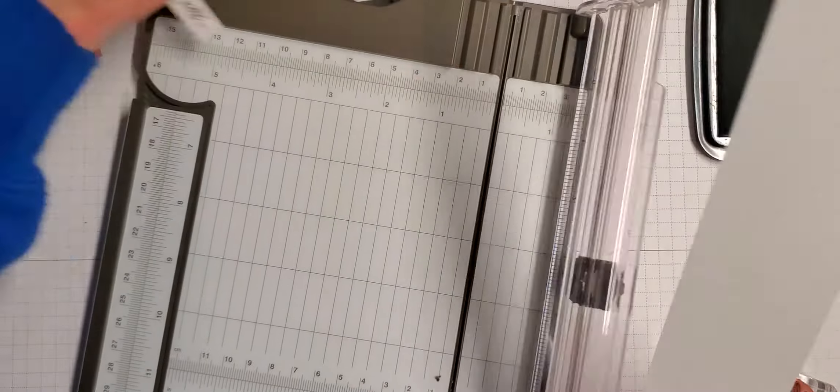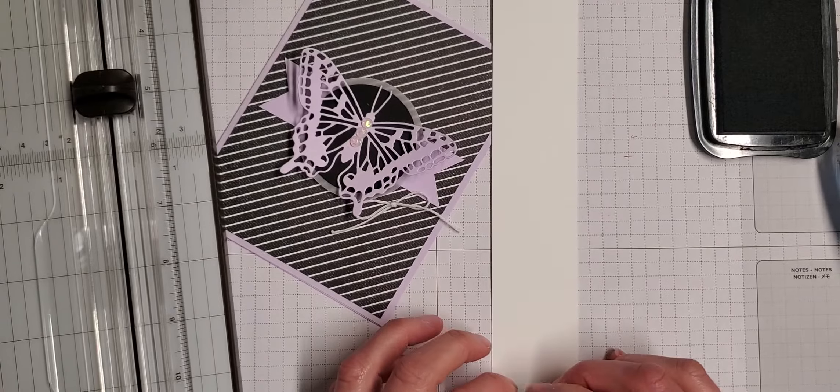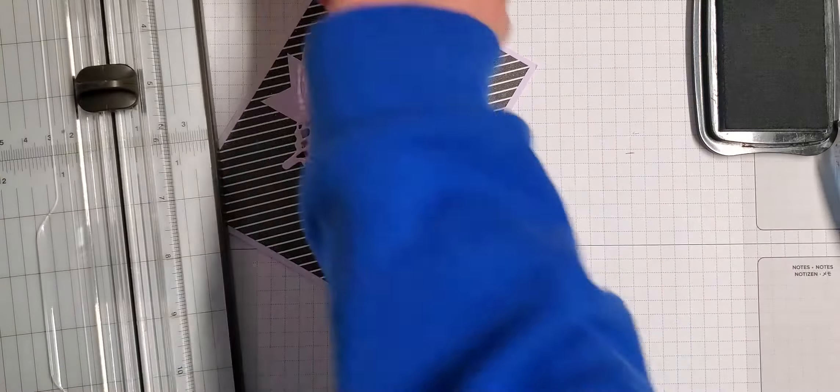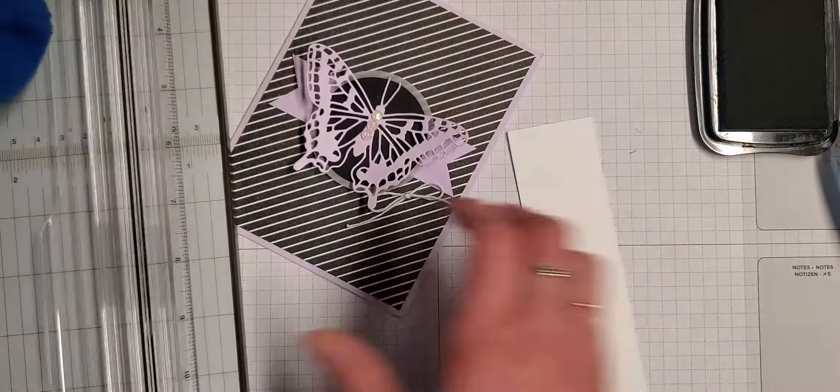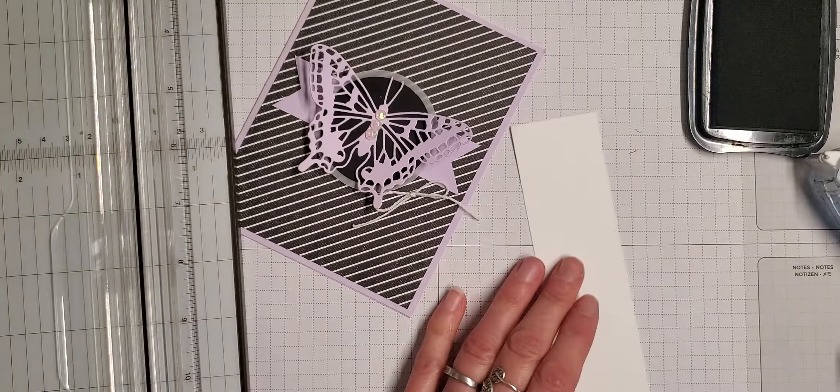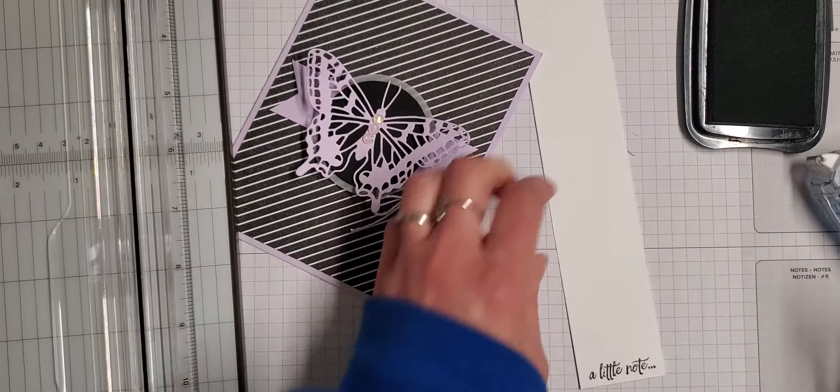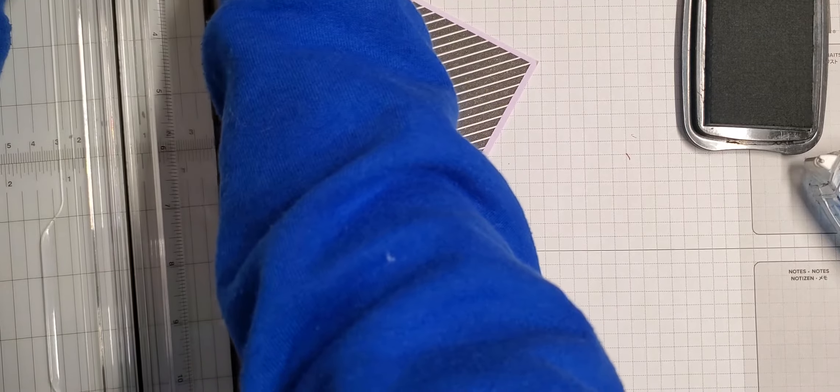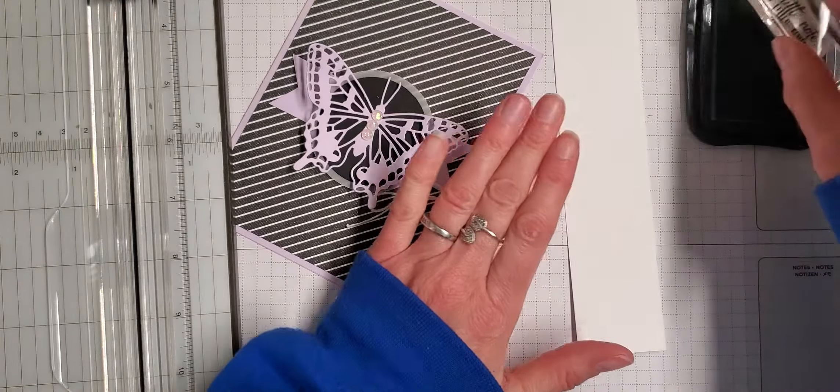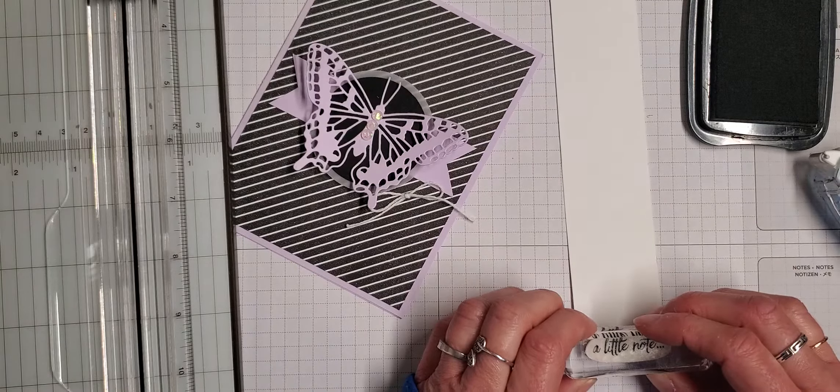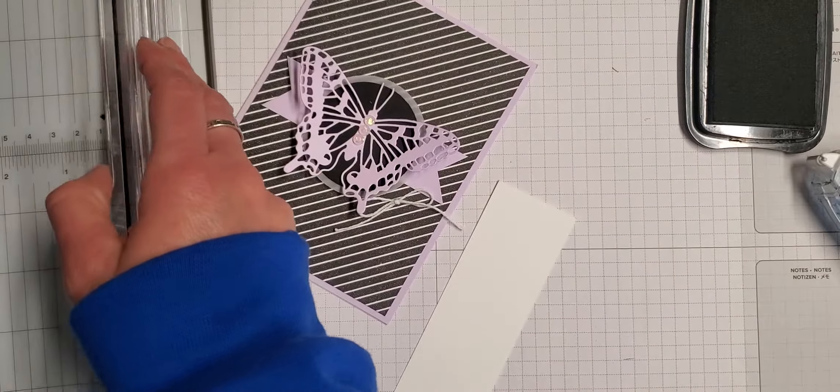So we need four of these so I'm going to trim it in really close, like that. There we go, and then I can stamp another one again right down at the bottom. Trim that out really close. Okay there's two, let's do another one down here. And that's number three. And one more right down at the bottom. And number four.